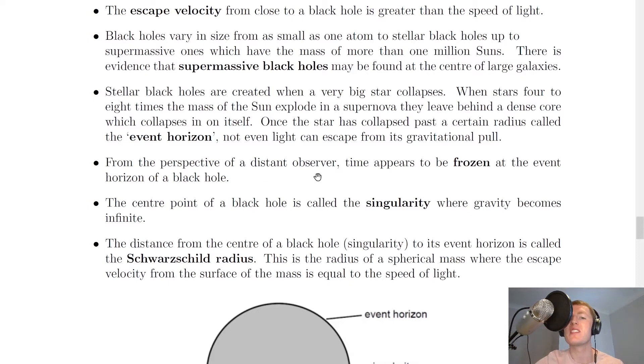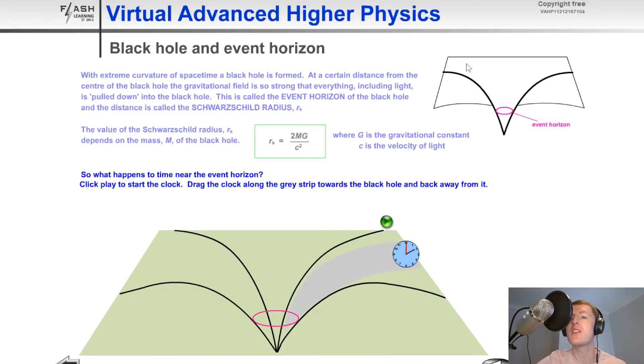From the perspective of a distant observer, time appears to be frozen at the event horizon of a black hole. And just to help you visualize this, I'm going to show you a quick animation. So if you imagine this is our warped spacetime and we've got our potential well there and we've got this event horizon there for our black hole. So the event horizon is this pink or reddish ring.